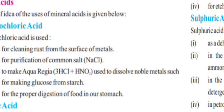First is Hydrochloric Acid, with formula HCl. Use number one: it is used for cleaning rust from the surface of metals. Particularly in the rusting process, iron gets rust (zang), and HCl is used to clean that rust. Use number two: for purification of common salt (NaCl) which we use in daily life.